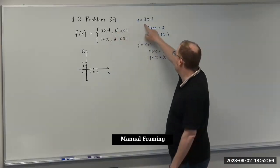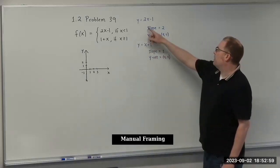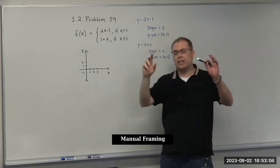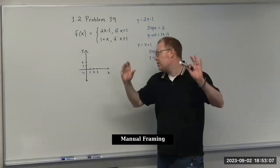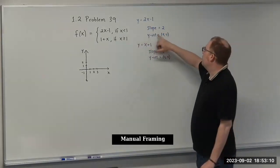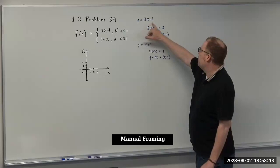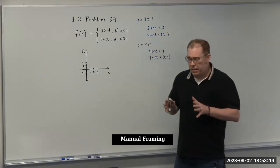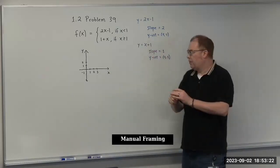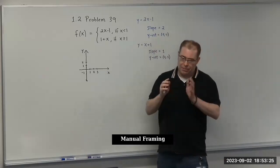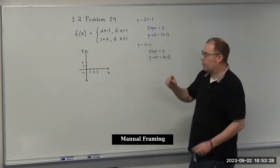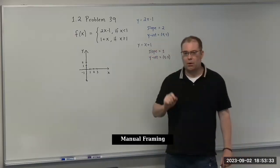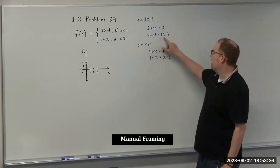Starting over here, let's look at the first one. We have 2x minus 1. This is, if you recall, in what's called slope-intercept form, that y equals mx plus b form that you remember from algebra. From there, we have our slope, and then your y-intercept, which in this case is 0, minus 1.